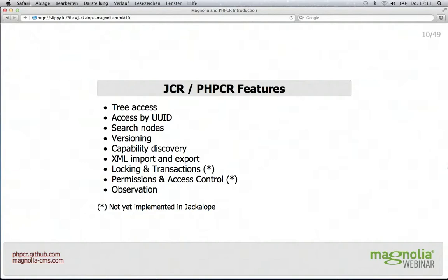There is locking and transaction support, so you can lock nodes or subtrees. You can have transactions to batch many operations and only commit at the end. There is also a permission system to define what users can do, with individual access control on individual nodes or subtrees. And finally, an observation component that allows you to build almost like a message queue by listening to changes, removals, or additions of nodes so that you can have your code called if something changes.